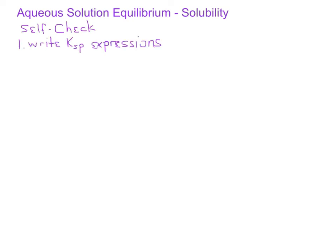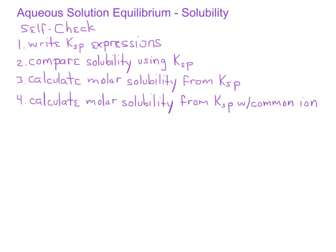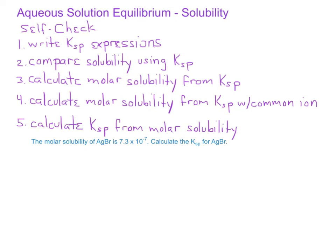In this video, you've learned how to write the Ksp, or the solubility product constant expression, for an ionic compound dissolving in water. You've also learned how to use Ksp values to compare the solubility of different compounds. Then we learned how to use the Ksp value to determine the molar solubility of a compound in water. And finally, we learned how to calculate the molar solubility of a compound dissolved in a solution that has a common ion, using the common ion effect in a solubility product problem. One thing we have not done yet, but you'll see an example of in class, is using a molar solubility to calculate the Ksp value for an ionic compound.